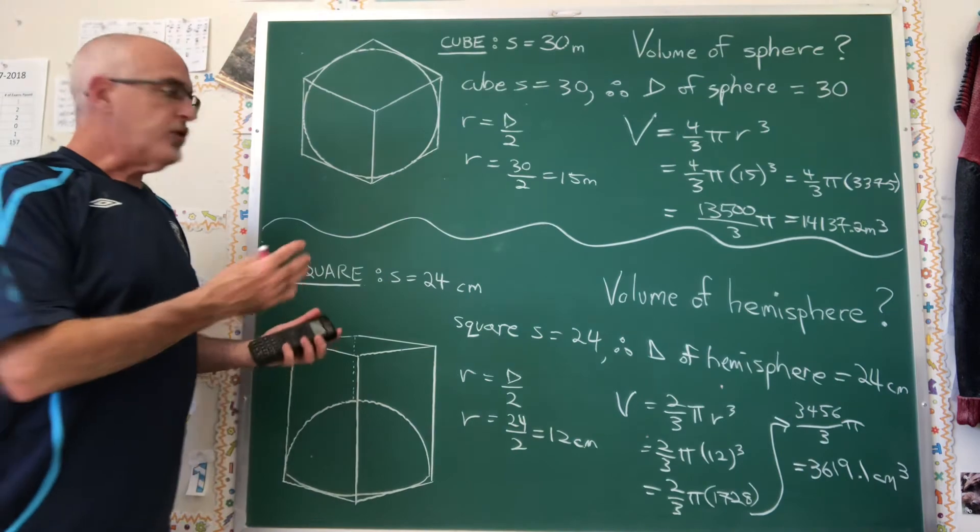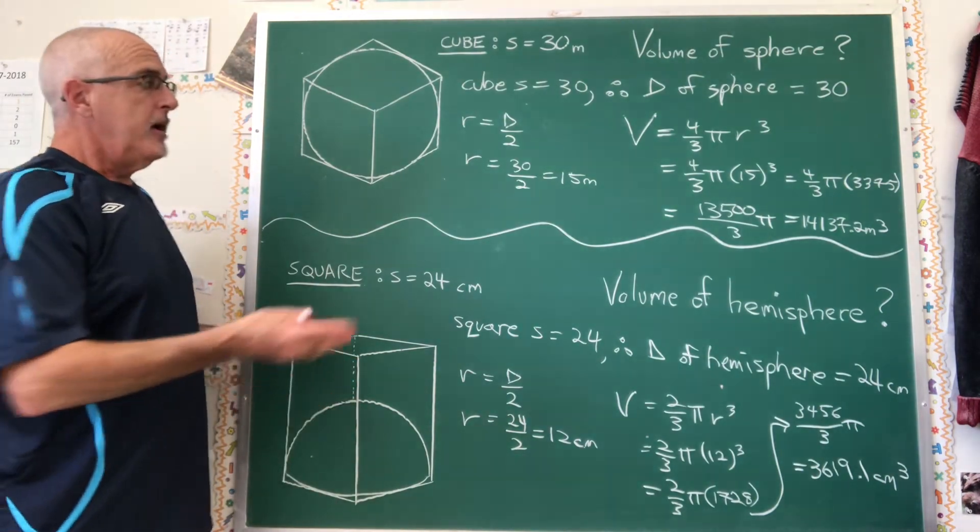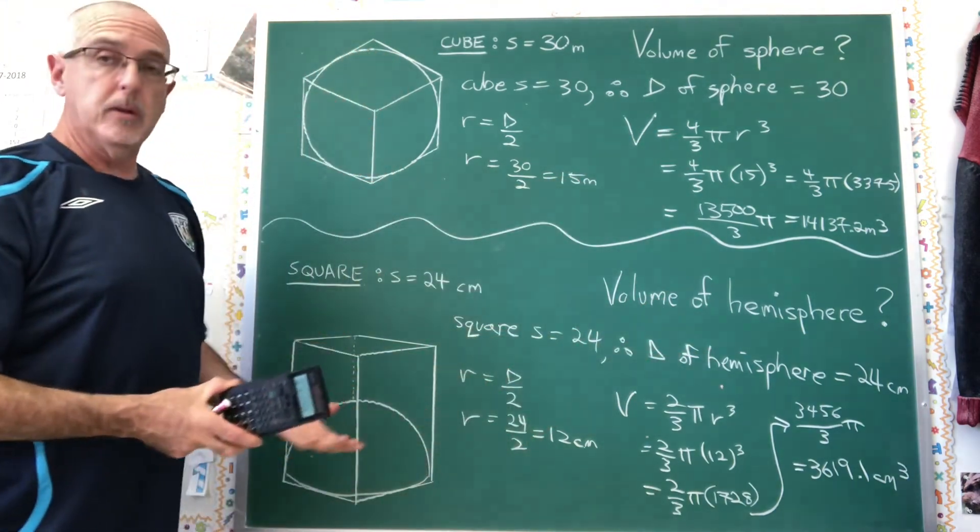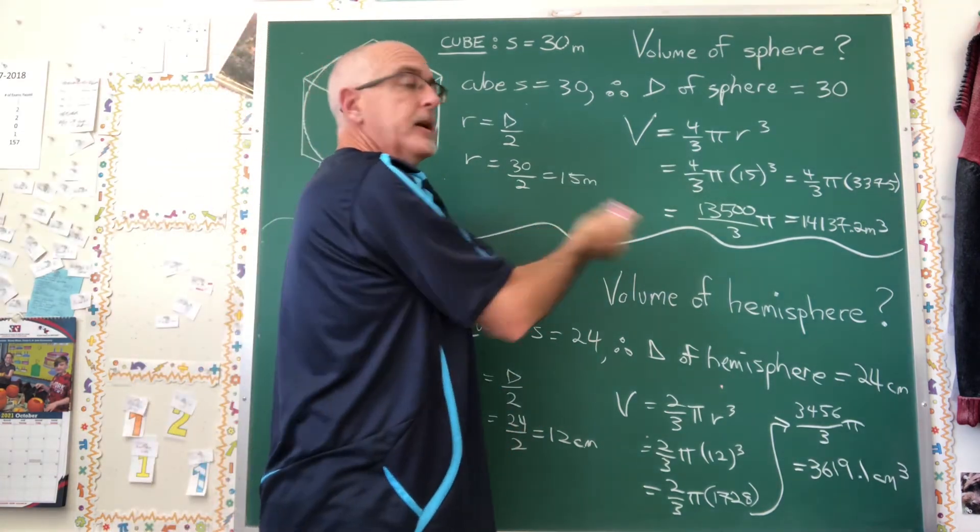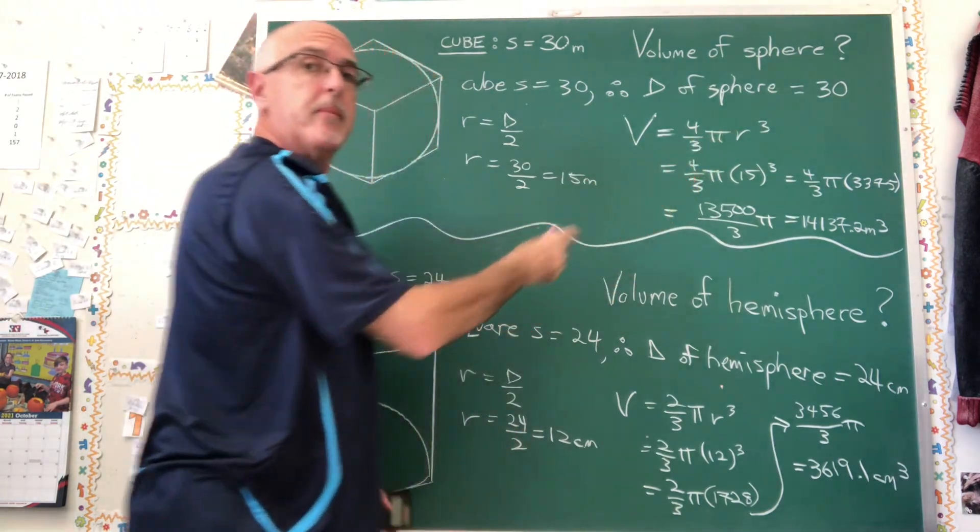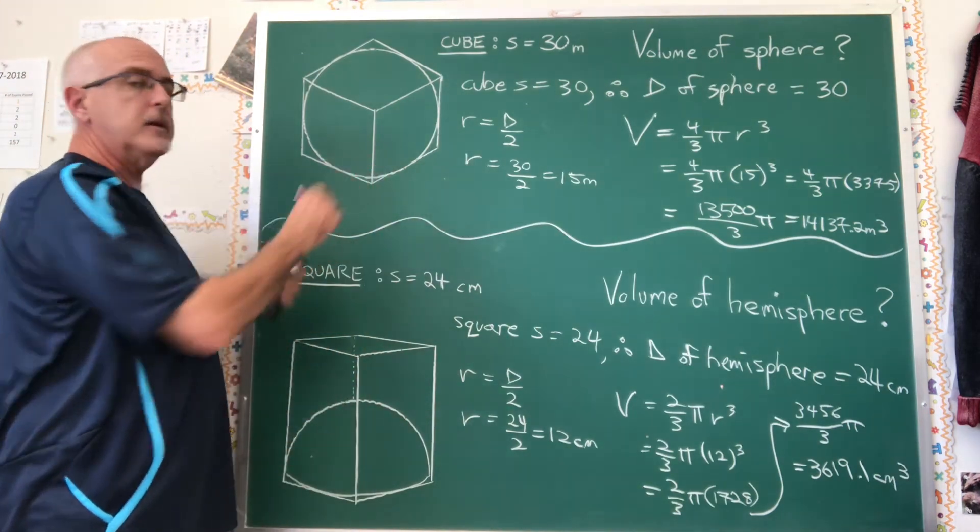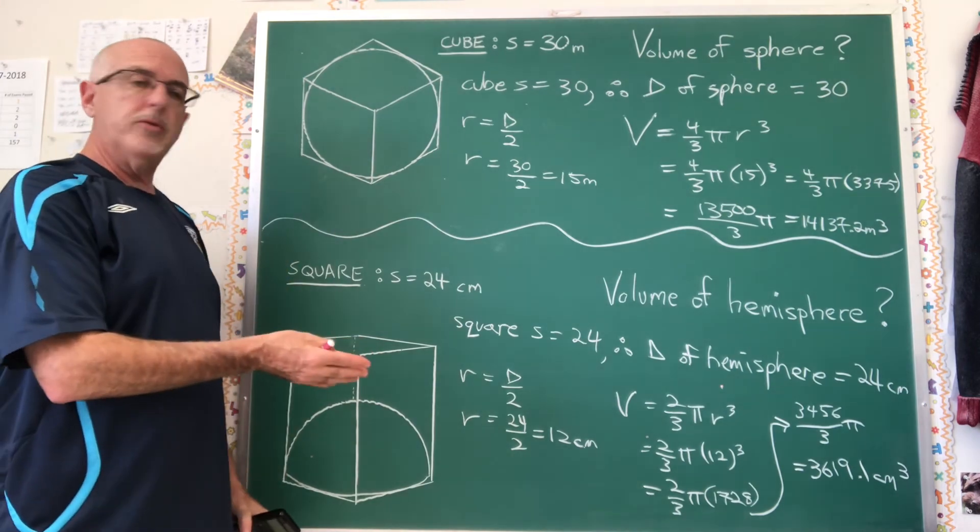So this is a little bit tricky just in the sense of how we're given the information. This formula, whether it's for the sphere or the hemisphere, is so simple because the only unknown when you're looking for the volume—the only dimension you need—is the radius. So how do we make this a challenging question for students? We find weird ways to give them the radius in an indirect way, but if you understand your geometry of solids,